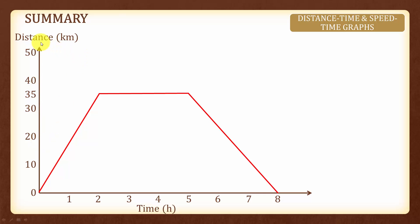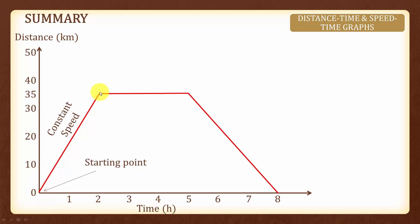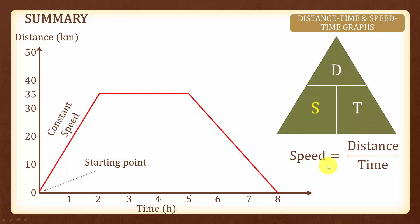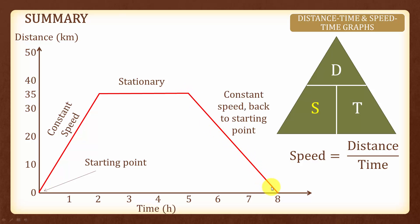In summary, in a distance-time graph, we will always have a reference point — in this case the starting point at 0 kilometers. The object moves at constant speed, and the speed can be found using the formula distance divided by time, which is the gradient. After which, the object is stationary. Then it is still moving at a constant speed, but moving back to the starting point. And that's all for this topic.